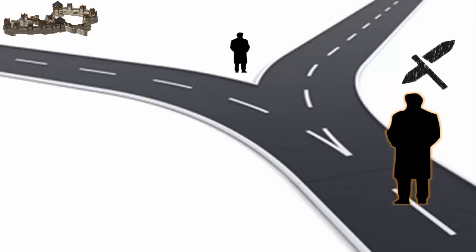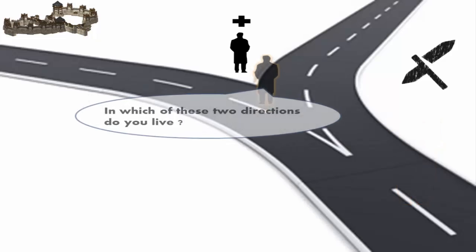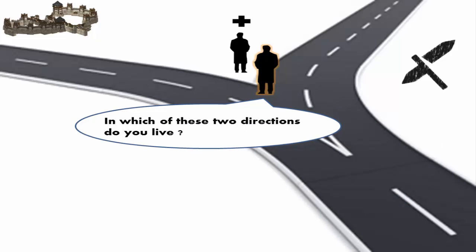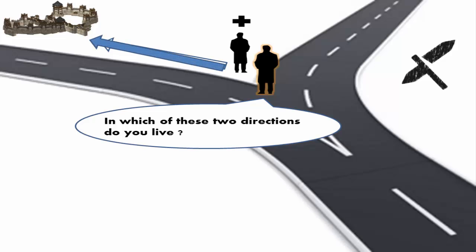Let's consider the first possibility: the resident is from Truthsville. Your question will be, 'In which of these two directions do you live?' The actual answer of this resident would be pointing this way, and since this resident is truthful, he will give you exactly the same answer. So based on his answer you can quickly identify that Truthsville is on this side.